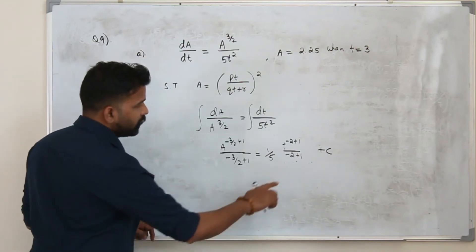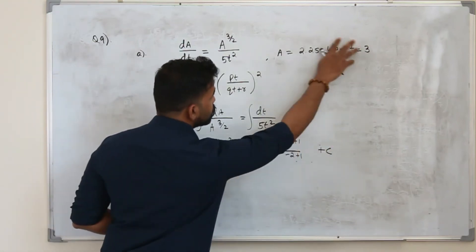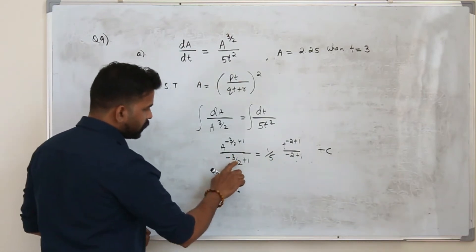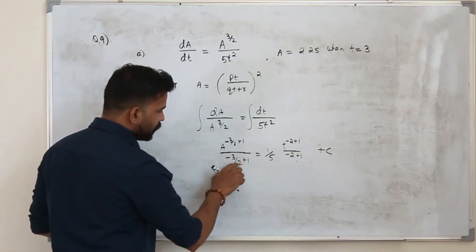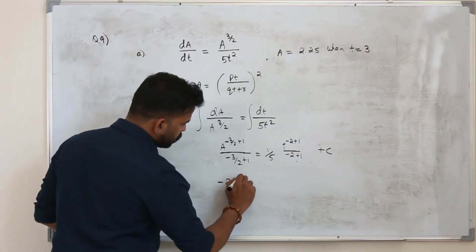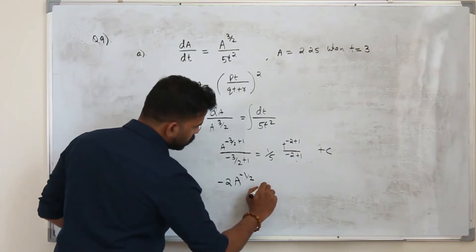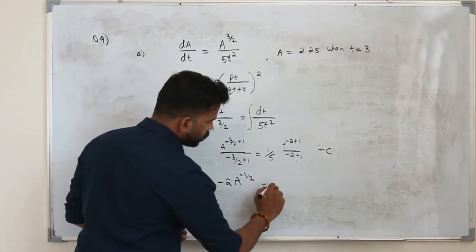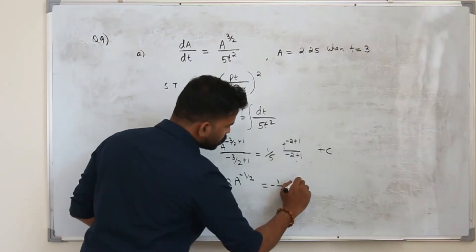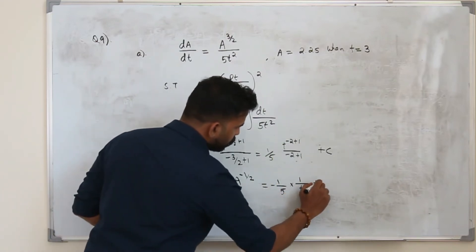Now you can find the value of c by using this condition. Now tidy this up a little bit. Minus 3 by 2 plus 1 is minus half. So it will become minus 2a to the power minus half is equal to minus 1 upon 5 times t to the power minus 1 is 1 by t. You can write just 1 by t.